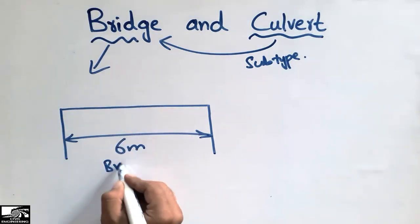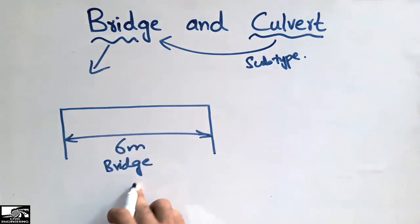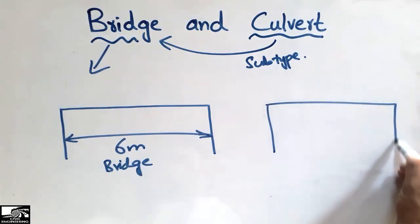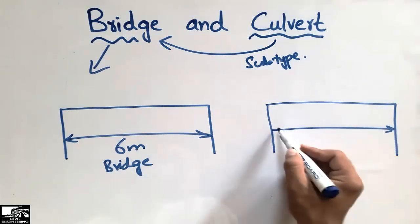In this openness, the total length of the structure is greater than 6 meters, we call it the bridge. But when this length is less than 6 meters, so we call it the culvert.